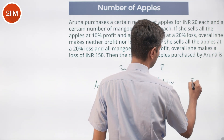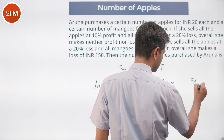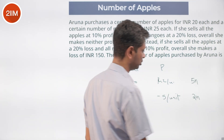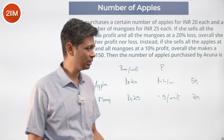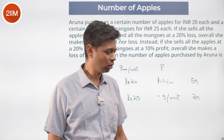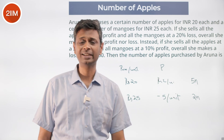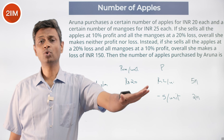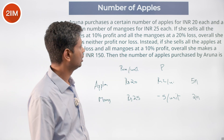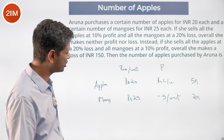Let the number of apples be 5n and the number of mangoes be 2n. The total profit is 5n × 2 = 10n and the total loss is 2n × 5 = 10n, which cancel out to zero. This confirms the break-even condition.